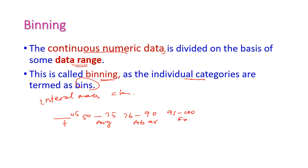Likewise, we need to divide those continuous data into number of bins. So this fail, average, above average, and excellent are called as bins. And this process is called as binning.